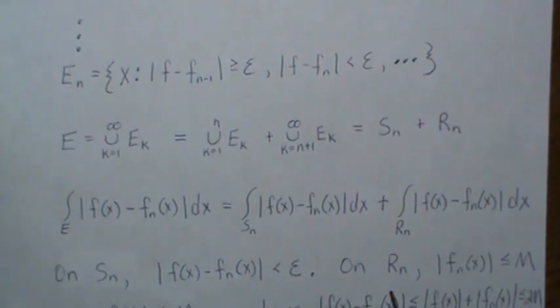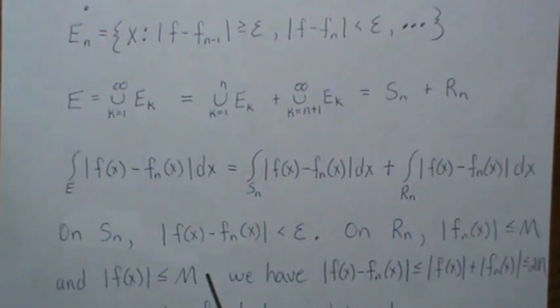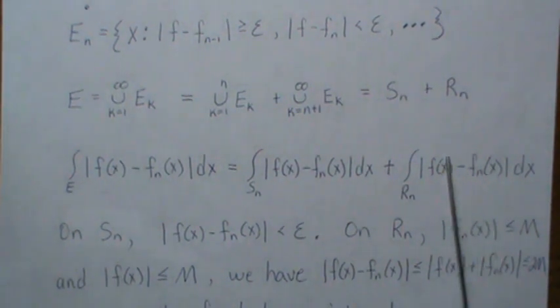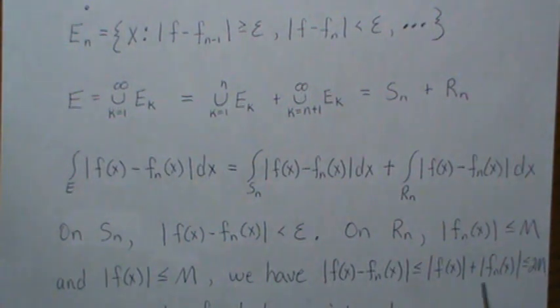And on R_N, we do know that since the functions are bounded, that if we look at this function here, it's less than or equal to the sum of the absolute values. And each of those is less than M, so that's less than or equal to 2M.